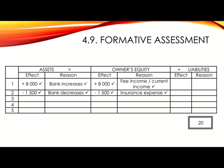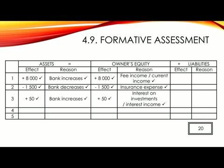Number three: interest received from the investment account, 50 Rand. Money is received so bank is affected in assets, and your other account involved is interest income. Since it is an income, it will be shown in owner's equity. Assets plus 50 (tick) because bank increases (tick). In owner's equity, plus 50 (tick). For interest on investments or interest income (tick) — no specifics were given for the name of the account, so you can use your discretion here, as long as the name of the account relates to what it actually is for.